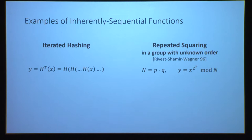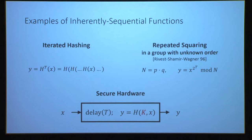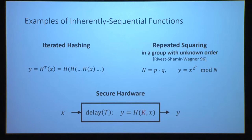The last example has a different flavor. The idea is to use secure hardware to implement an inherently sequential function. Think about a secure hardware component that has a secret key k hidden inside it. Given input x, it does nothing — it waits for time t — and then it evaluates a pseudo-random function on x. This function looks completely random to someone who doesn't know the secret key. If you know the key k, you can compute the function immediately; but since the key is hidden inside the hardware, the only way to compute this function is to use the hardware and incur this delay.